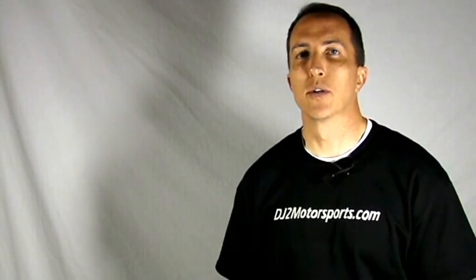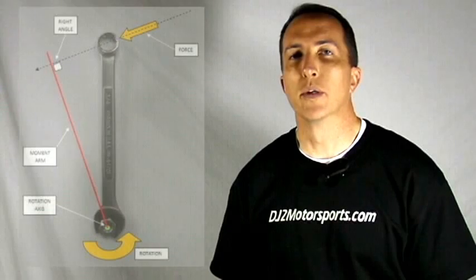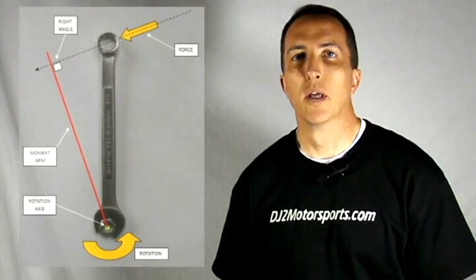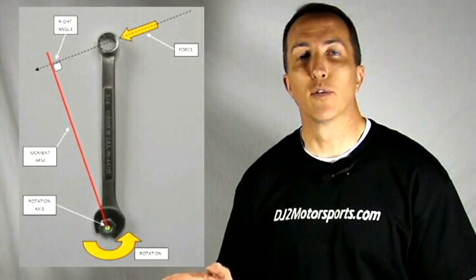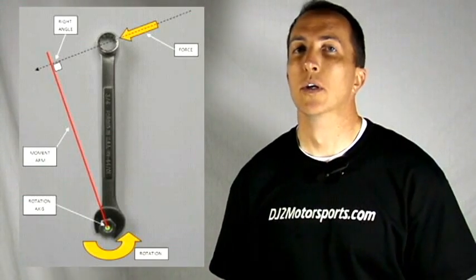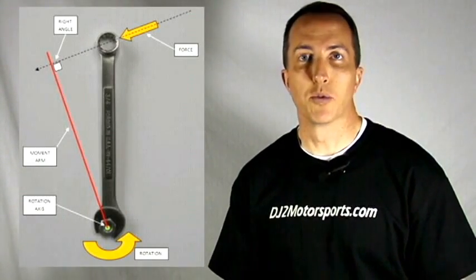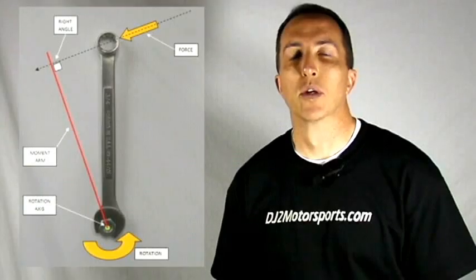Now what this does is it increases the length of the moment arm. The moment arm is the distance between the pivot point and where it intersects the line of force at a right angle — or the perpendicular distance between the pivot point and the line of force.